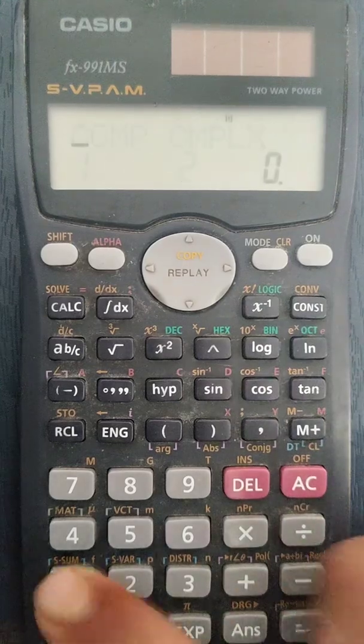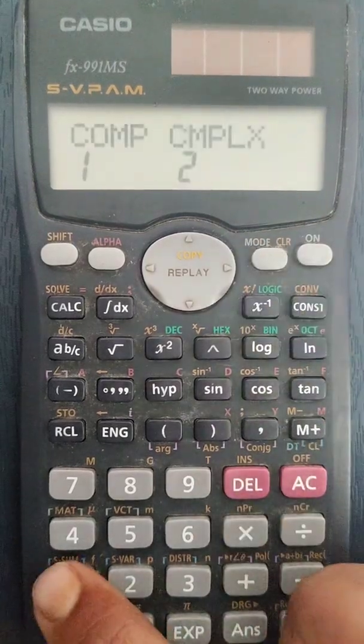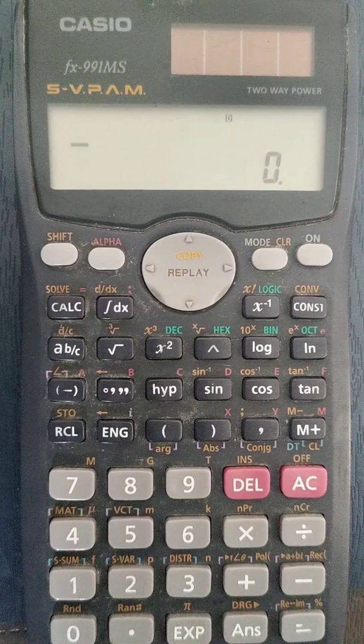To get out of the mode, you have to click 1 and then you have to click mode and then click 1. So you will get out of the equation mode.